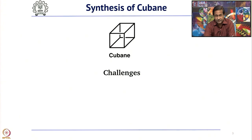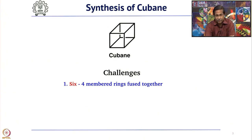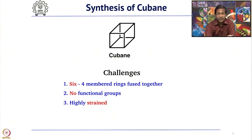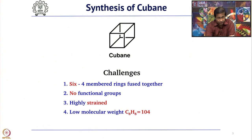When you talk about total synthesis, the molecule need not be very complex — even small molecules can give their own trouble. Cubane is one such case; it gives different types of challenges compared to other big molecules. The first challenge is 6 four-membered rings fused together. The second challenge, important from a retrosynthetic point of view, is that Cubane does not have any functional group. In retrosynthesis you look at a functional group and a strategic bond — when the target molecule has no functional group, that is a problem. Additionally, it is highly strained and has a molecular weight of only 104. Low molecular weight compounds are always difficult to synthesize.